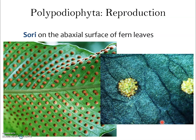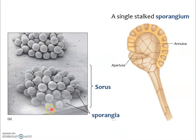A few highlights of reproduction in the ferns — you saw this in lab. On the underside of leaves, we have clusters of sporangia. Each cluster is called a sorus (S-O-R-U-S), or multiple are called sorai. Abaxial means underside, so we've got sorai on the underside of leaves. Zooming in on a sorus, you can see the individual sporangia. A single sporangium has a stalk — reminiscent of what we saw in mosses, liverworts, and lycophytes — and a capsule with spores inside.